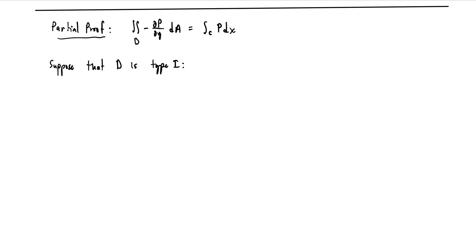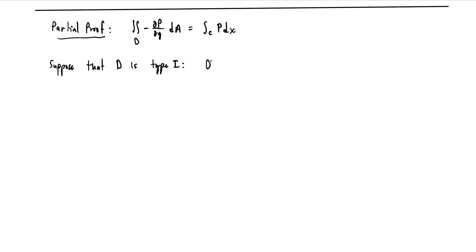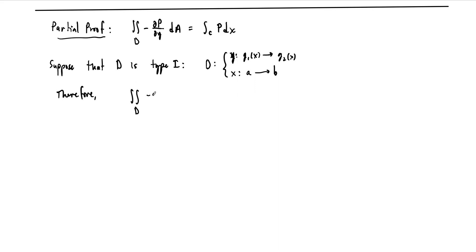So suppose D is type 1. If it's type 1, it fits the picture I've drawn: bounded in the y-direction by g1 and g2, and in the x-direction by constants. So D can be represented with y going from g1(x) to g2(x), and x going from a to b. Therefore, the double integral over D of minus dP/dy dA can be written as an iterated integral with outer bounds a and b, inner bounds g1 to g2, integrating dP/dy with respect to y first.